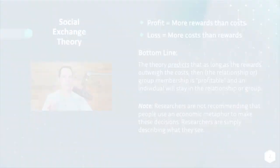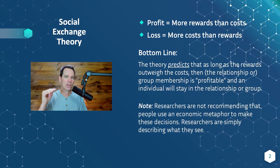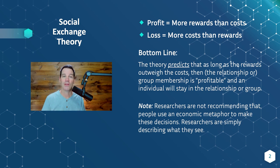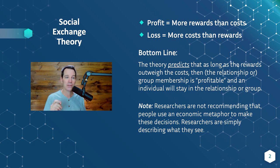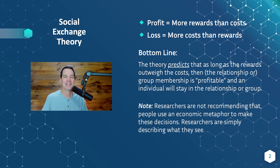Here's how the theory essentially works: we are looking for profits — more rewards than costs — and we're trying to avoid losses, which is more costs than rewards. The theory predicts that as long as rewards outweigh costs, the relationship or group membership will continue. If the costs outweigh the rewards and you get those losses, you will not likely stay in the group.